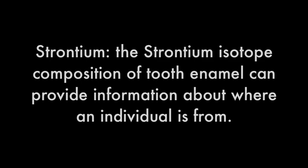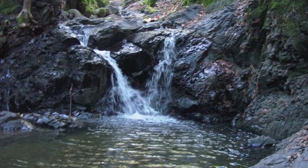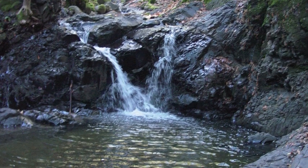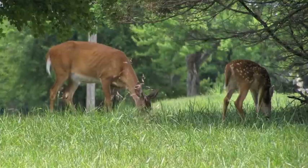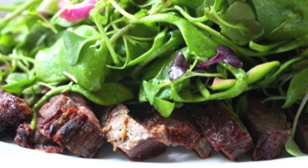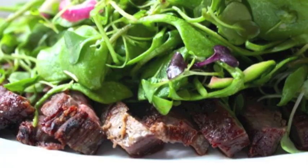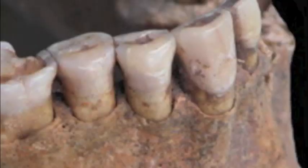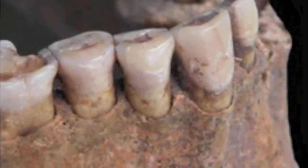Strontium occurs naturally in the bedrock. It is absorbed into the water system, and the water is absorbed into plants, and animals eat the plants. People eat both the plants and the animals, and they take strontium into their system, and that's preserved best in their teeth.